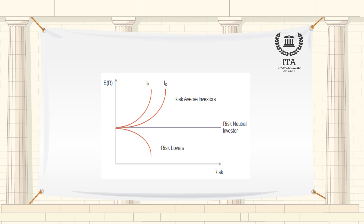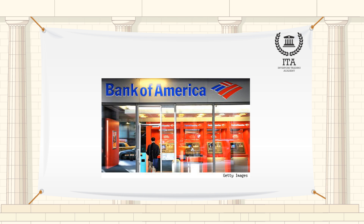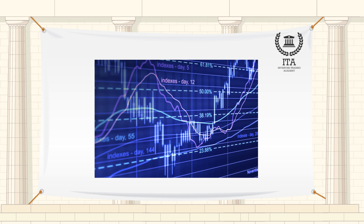Risk aversion is the reluctance of a person to accept a bargain with an uncertain payoff rather than another bargain with more certain but possibly lower expected payoff. For example, a risk averse investor might choose to put his or her money into a bank account with a low but guaranteed interest rate rather than into a stock that may have high expected returns but also involves a chance of losing value.